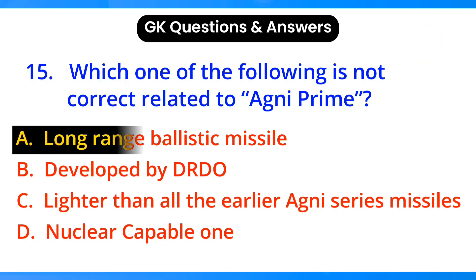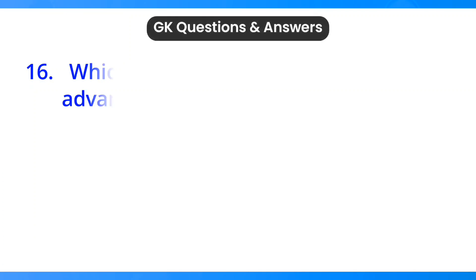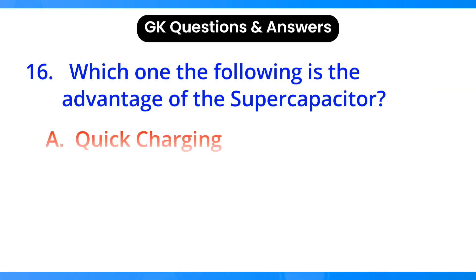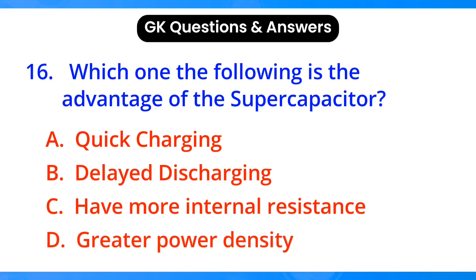Which one of the following is not correct related to Agni Prime? Answer: option A, long-range ballistic missile. Which one of the following is an advantage of the supercapacitor? Answer: option A, quick charging.